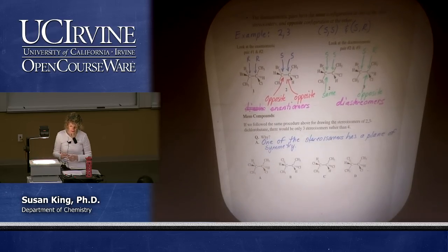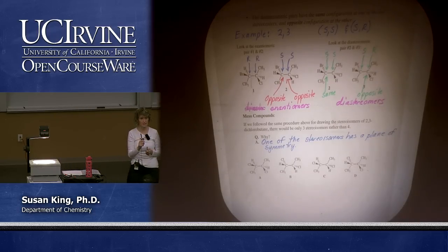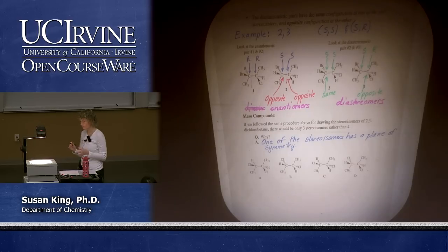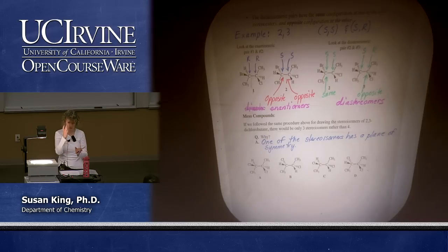Just because a molecule has stereocenters doesn't mean it's chiral. If there's one stereocenter, yes it is. But if there's more than one we can sometimes have arrangements where we have a plane of symmetry, and the two stereocenters sort of cancel each other out because there's a plane of symmetry.